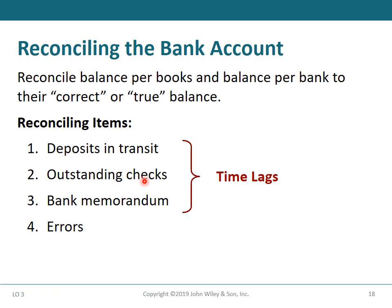The third item is bank memoranda — either debit memoranda or credit memoranda — which appear in the bank statement but have not yet been recorded by the company. These first three causes result from timing differences. The fourth cause is errors, which can occur either in the bank statement or in the company books, and corrections are made wherever the error occurred.